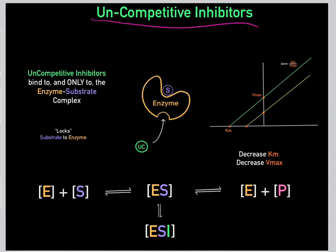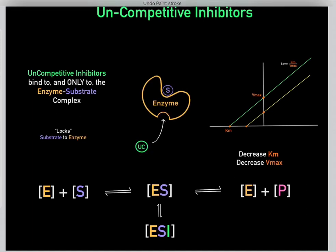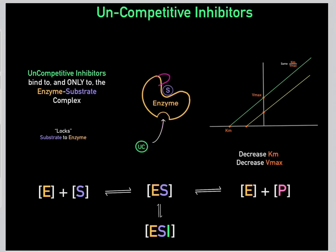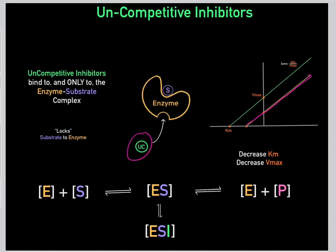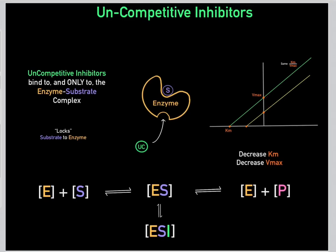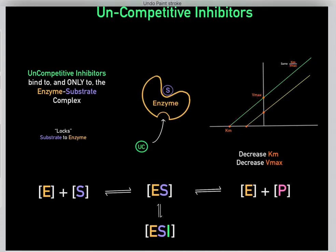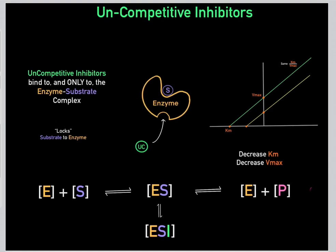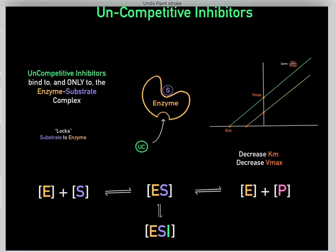The key thing about uncompetitive inhibitors is they bind to the allosteric site only once the substrate binds to the enzyme, opening up that allosteric site. Then the inhibitor locks in the substrate, inhibiting the enzyme. On the Lineweaver-Burk plot, adding an uncompetitive inhibitor causes both KM and Vmax to decrease, while the slope (KM over Vmax) stays the same. Remember this is an inverse plot, so when the KM moves to the left, that represents KM decreasing.